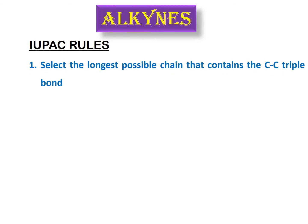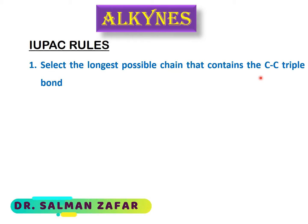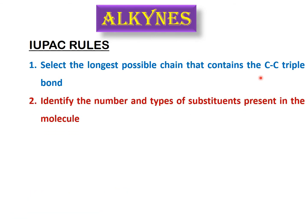The first and basic rule is to select the longest possible chain that contains the carbon-carbon triple bond. Because in alkynes the triple bond is the parent functional group, you have to select the longest chain that contains it — you cannot ignore the triple bond. If that chain has substituents, you should identify the number and types of substituents present on the chain.